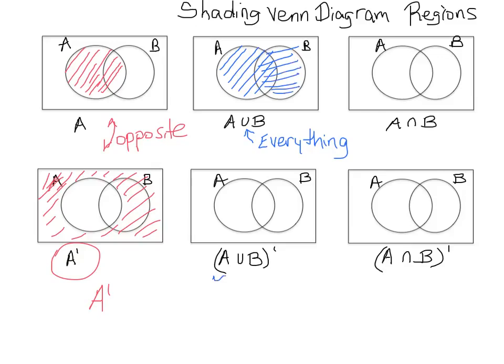A union B is what we just shaded, and now we're going to shade the opposite because we have that little prime there — so the opposite of A union B. You have to shade everything on the outside of the circles.